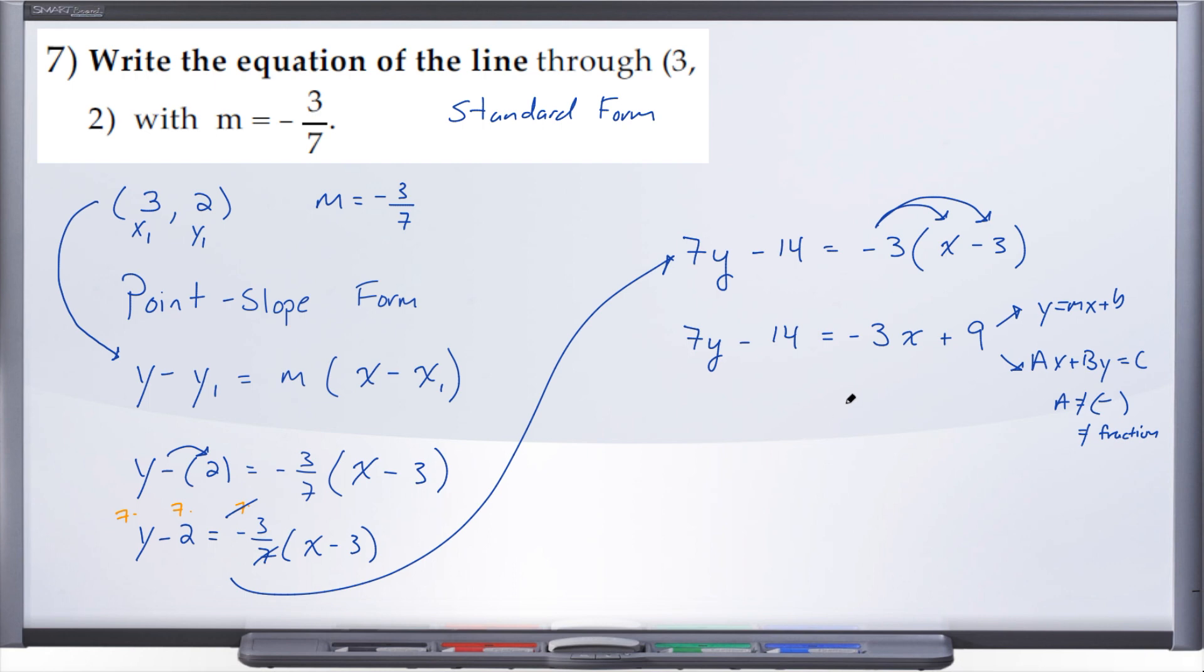So if we want x and y on one side, let's go ahead and add 3x to both sides. So that's going to give us 3x plus 7y minus 14 equals 9.